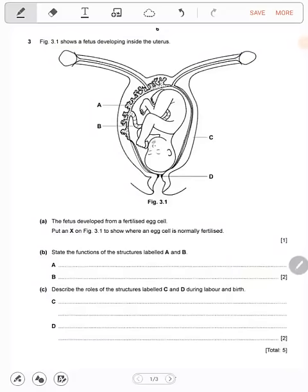The fetus developed from a fertilized egg. Put an X on this figure to show where an egg cell is normally fertilized. Now where does fertilization occur? It's in the fallopian tube or oviduct. We can put an X here or there, as long as it's within the fallopian tube.